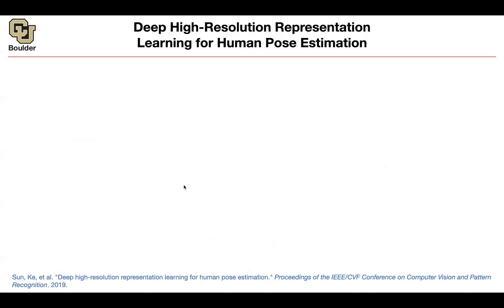We can move on. This last one from pose estimation is about architecture design, and it's actually one of the best architectures when it comes to image transformation, dense prediction, and per-pixel prediction. The method is for pose estimation, but you can apply it to semantic segmentation or any per-pixel prediction task.